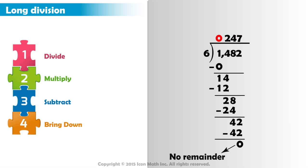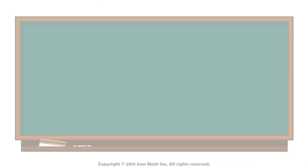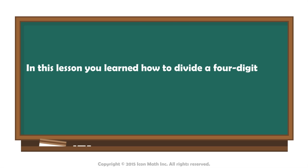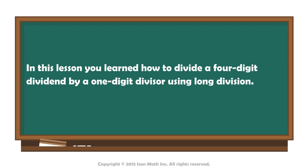Remember that a 0 on the left of a number is a leading 0. Since it has no value, we can drop it. In this lesson, you learned how to divide a 4-digit dividend by a 1-digit divisor using long division.